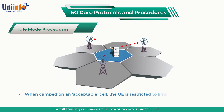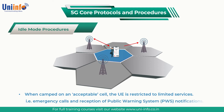When camped on an acceptable cell, the UE is restricted to limited services — i.e., emergency calls and reception of public warning system (PWS) notifications.